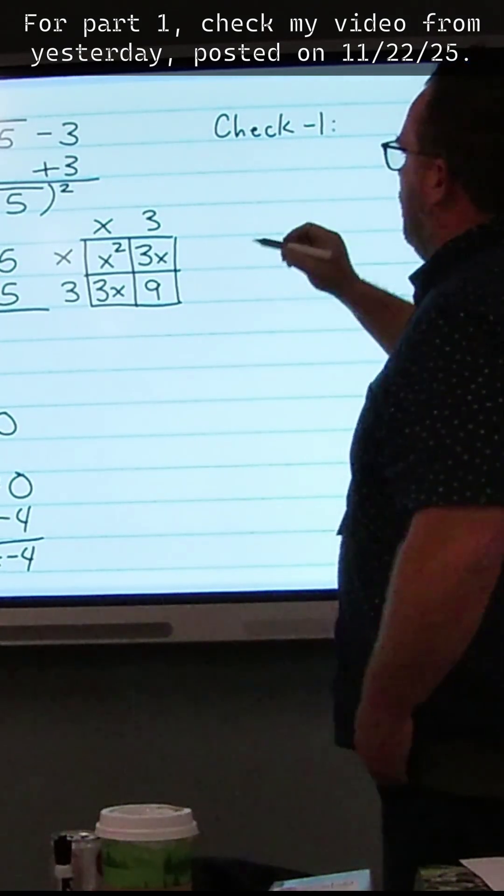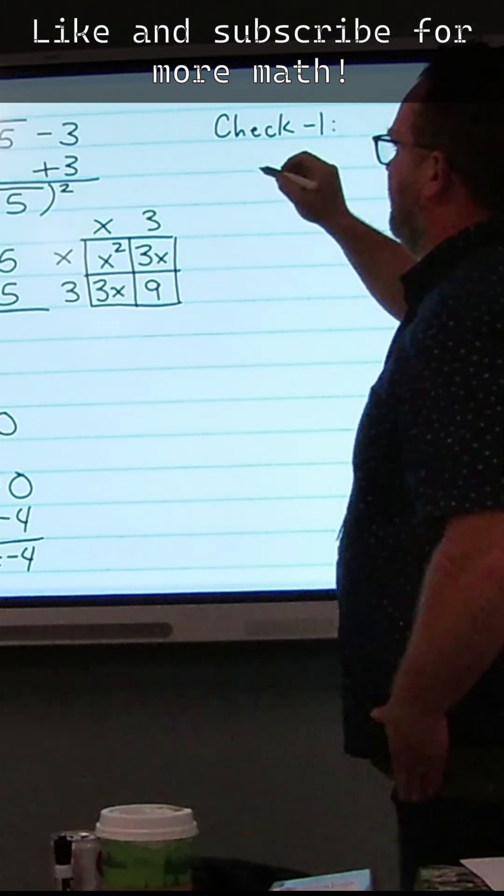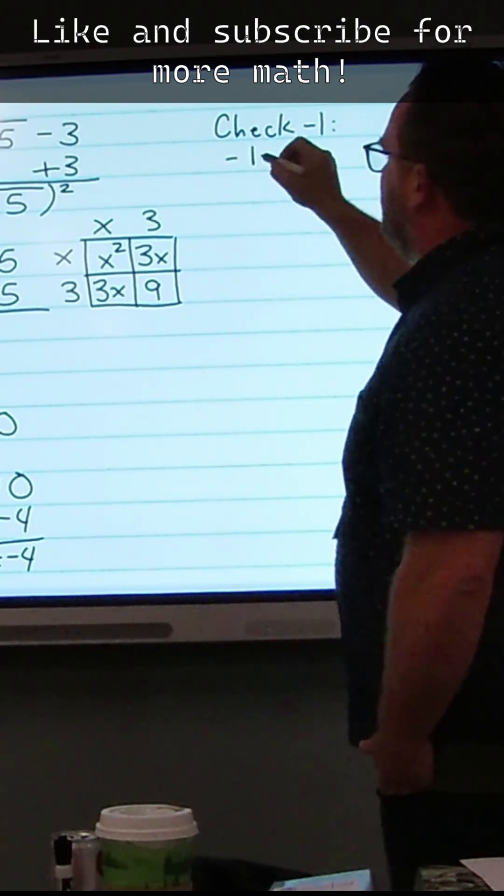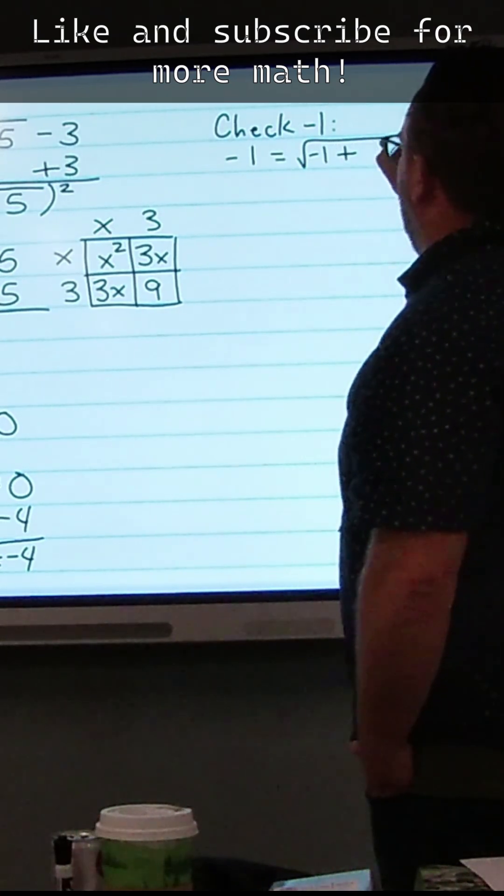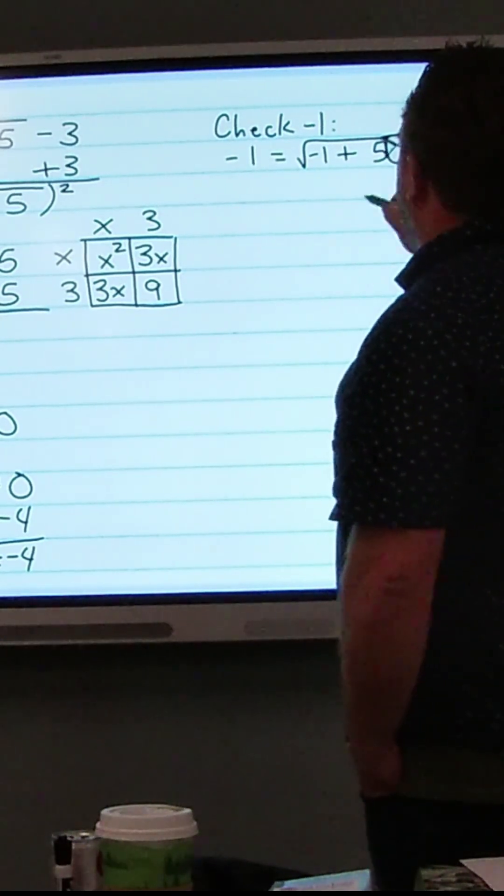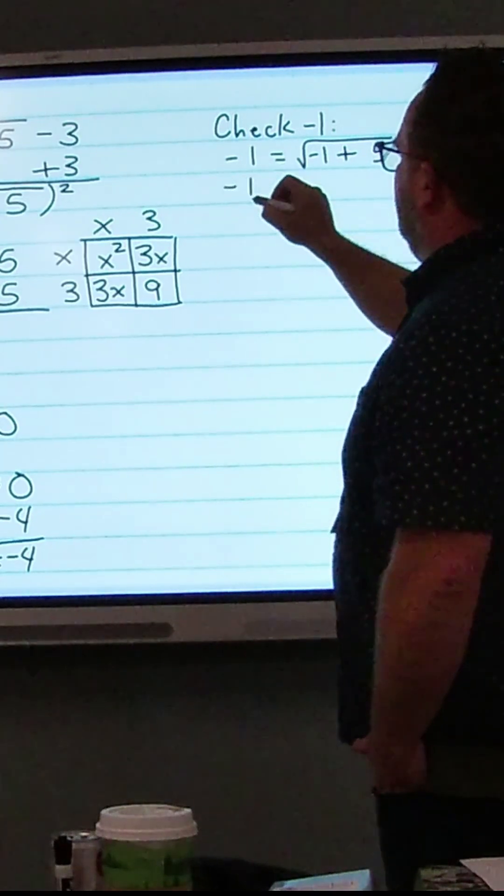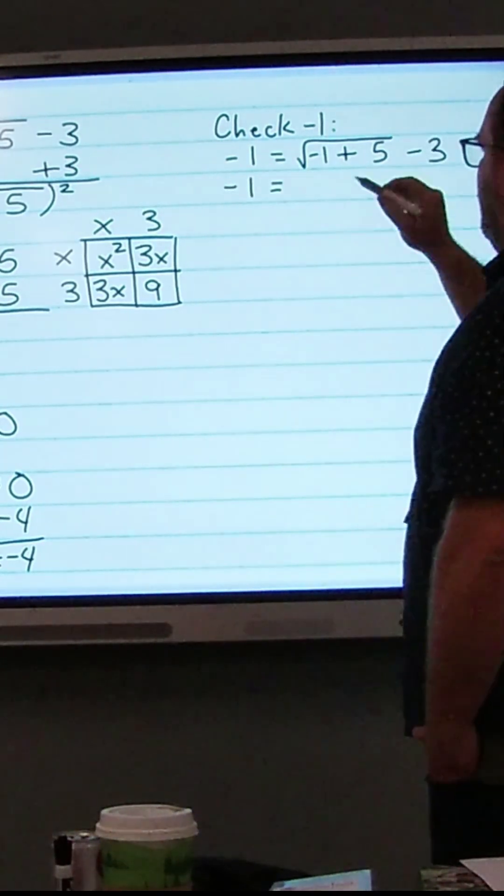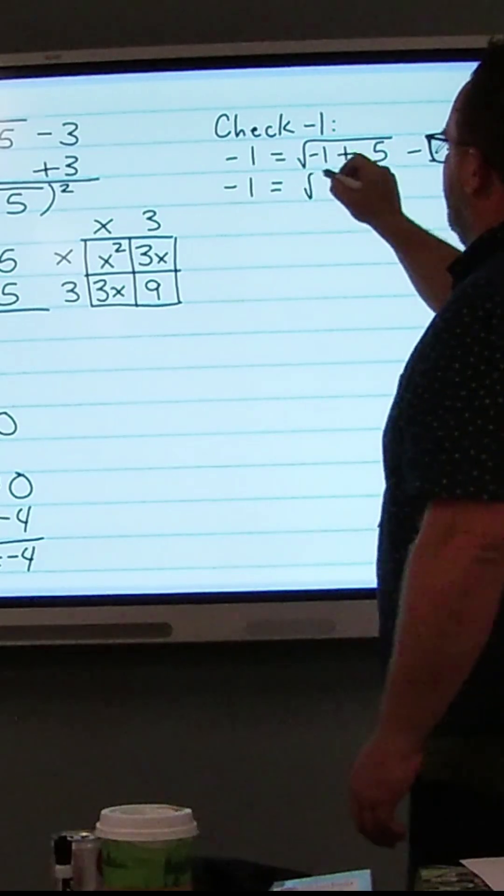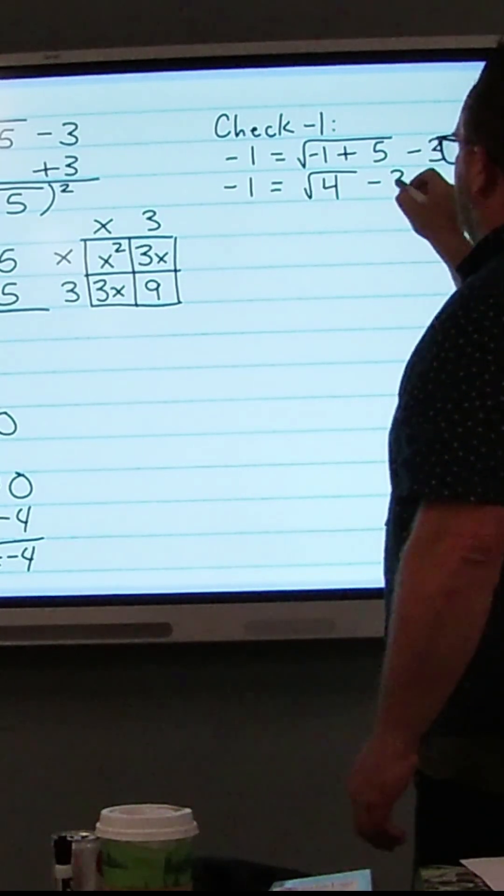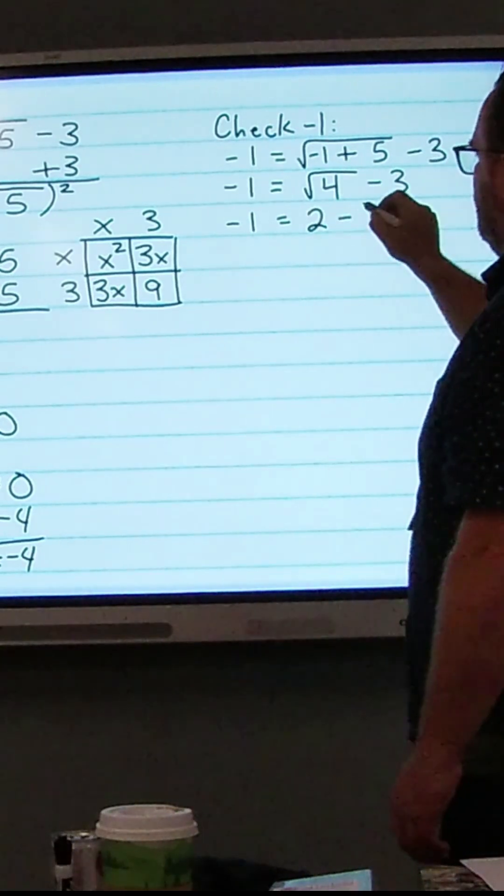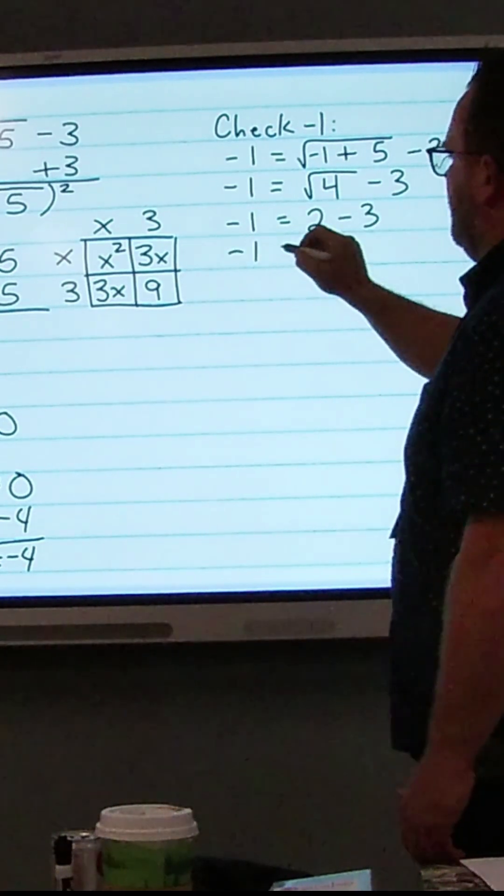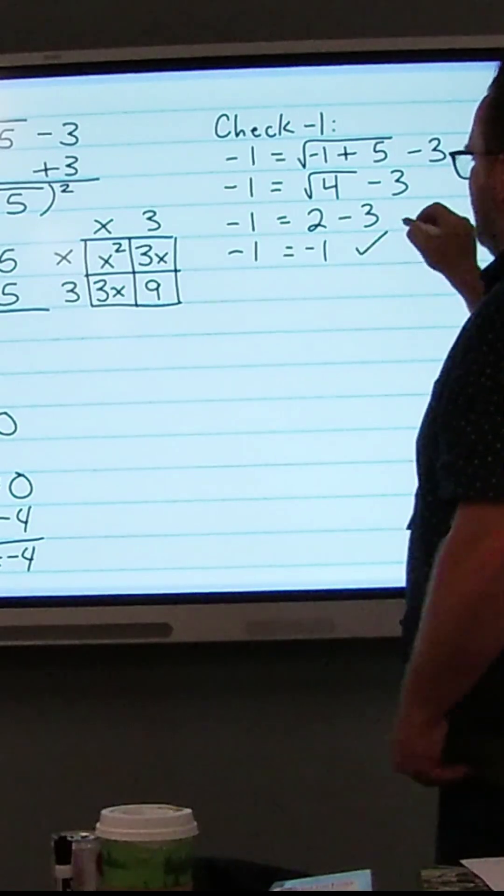So we'll plug negative 1 and substitute it back into the original equation. So does negative 1 equal the square root of negative 1 plus 5 minus 3? Well, negative 1 plus 5 is 4. So the square root of 4 minus 3, the square root of 4 is 2, so 2 minus 3. So negative 1 does equal negative 1, so that does check.